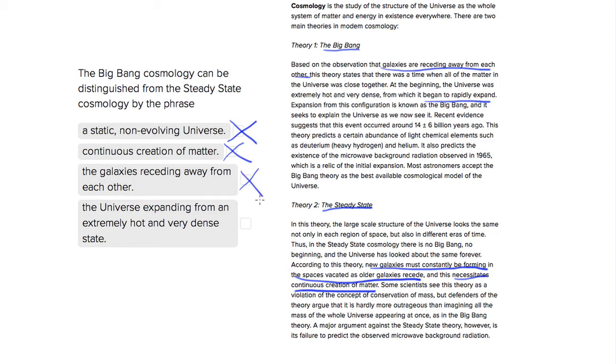Which leaves us with choice number four, and it's definitely going to be correct. The universe expanding from an extremely hot and very dense state. We see the exact phrase in the passage: the universe was extremely hot and very dense from which it began to rapidly expand. Whereas in the steady-state theory, there is no Big Bang—the universe has looked about the same forever. So we didn't have this event with heat and density. Choice four is our answer.